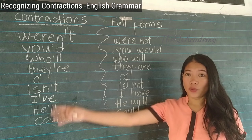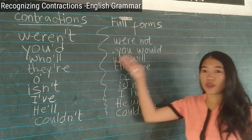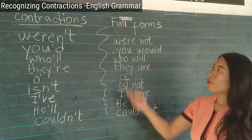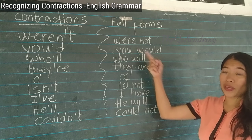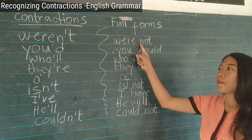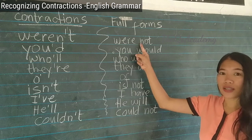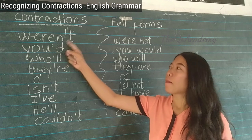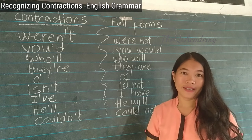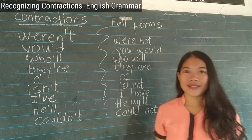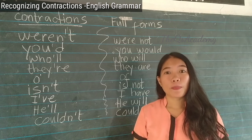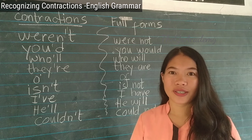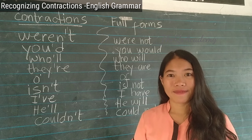Notice the contracted words and the full forms. In the full forms, we can see a space between the words. But in the contracted words, there's no more space — instead, you can see an apostrophe. Again, you replace the omitted letters with the apostrophe.